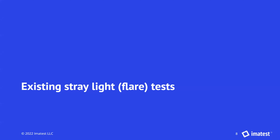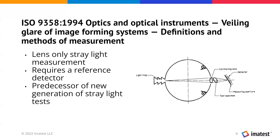Now let's briefly talk about existing stray light tests. First, ISO 9358 — this is an optics-only stray light test meant to test individual lens elements or lens groupings. It's not a system-level test. I consider this a predecessor of the new generation of stray light tests we're talking about today. It requires a reference detector that has undergone radiometric calibration to get an absolute measurement of the amount of stray light.